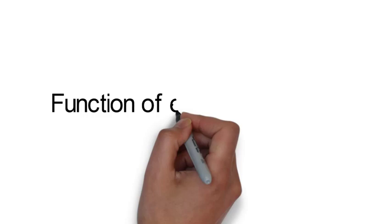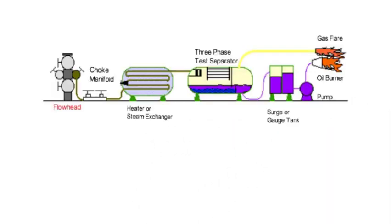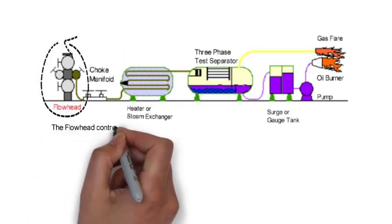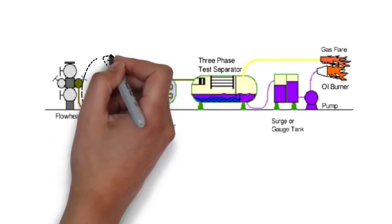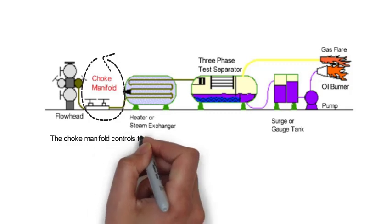Function of each equipment. The flow head controls the well pressure. The choke manifold controls the flow and the pressure.